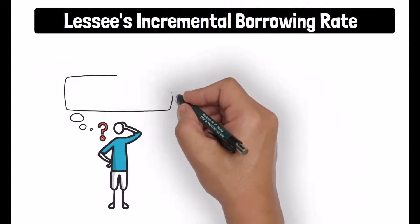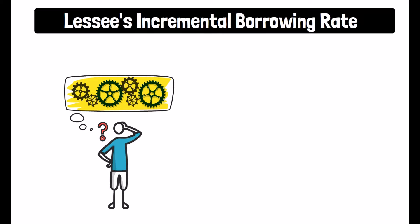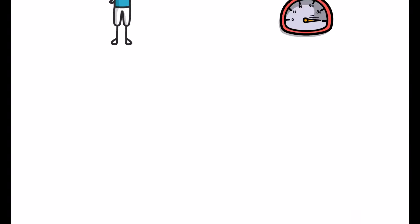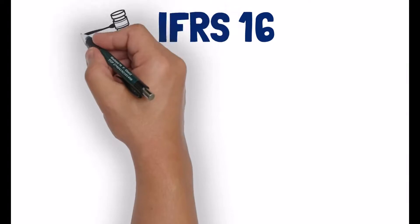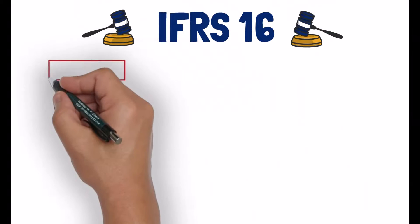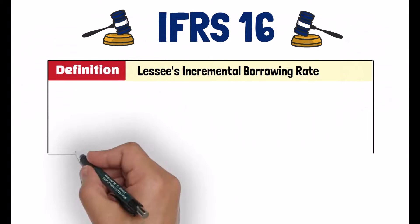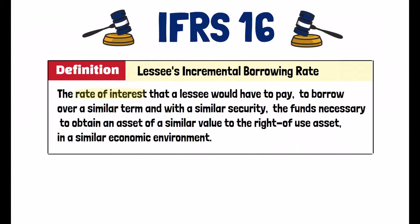Figuring out the lessee's incremental borrowing rate involves a significant amount of judgment, which means that we are trying to figure out a rate that is reasonable rather than an exact rate. IFRS 16 gives broad guidance on how to figure the lessee's incremental borrowing rate. It defines the lessee's incremental borrowing rate as the rate of interest that a lessee would have to pay to borrow over a similar term and with a similar security, the funds necessary to obtain an asset of a similar value to the right-of-use asset in a similar economic environment.